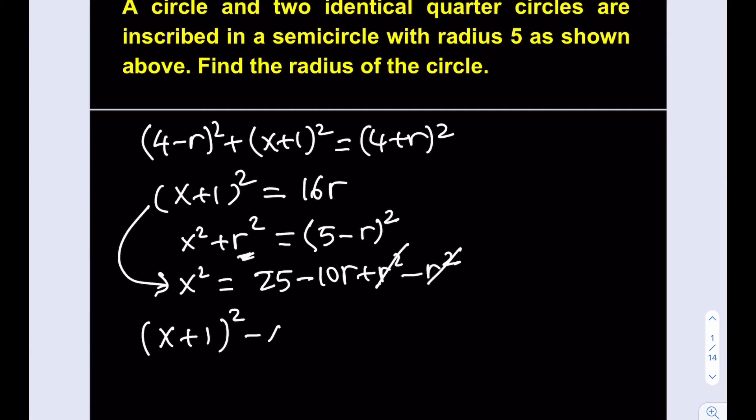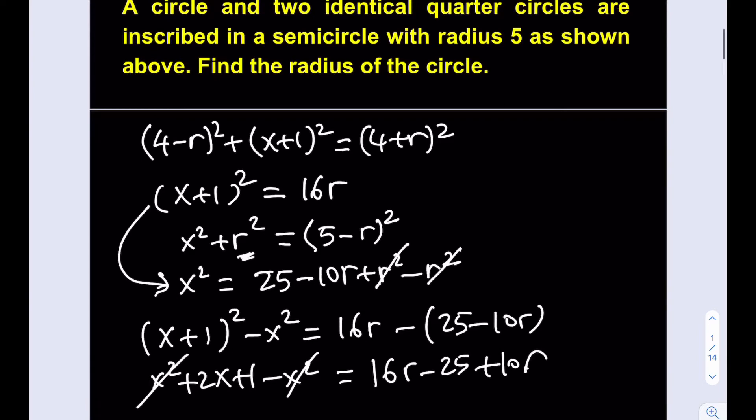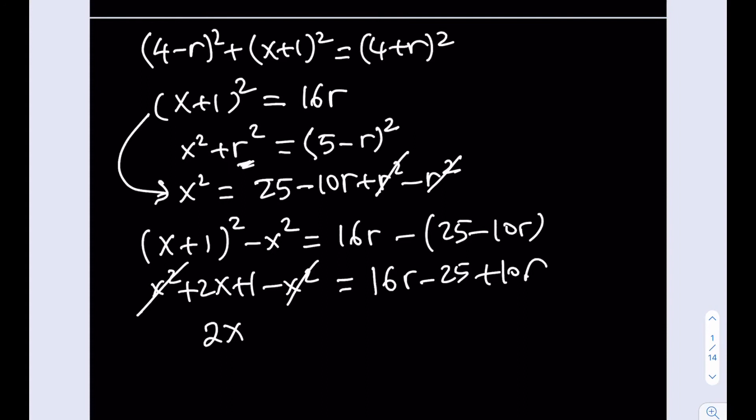I don't want to take square roots here. What I want to do is subtract those two quantities because then I'm going to get rid of the quadratic terms, which is kind of nice. So I don't have to deal with square roots. If you subtract these two equations side by side, you're going to get x plus 1 quantity squared minus x squared equals 16r minus the quantity 25 minus 10r. From here, you're going to get x squared plus 2x plus 1 minus x squared. This gives you 2x plus 1 and this is going to be 16r minus 25 plus 10r, which equals 26r minus 25. From here, I can write x in simplest form as 13r minus 13.